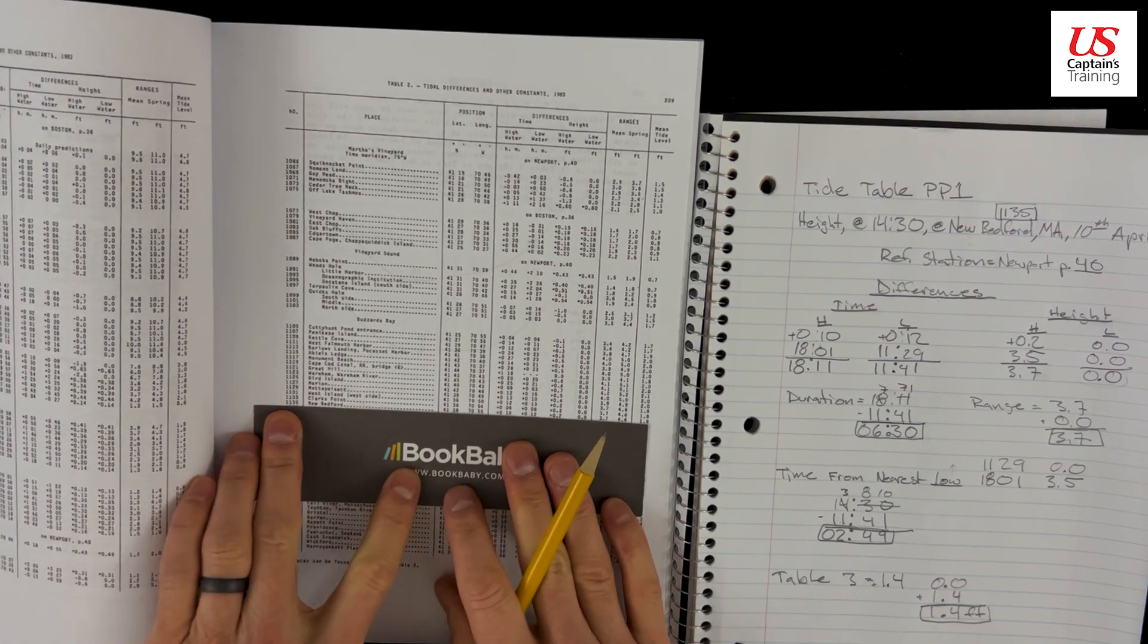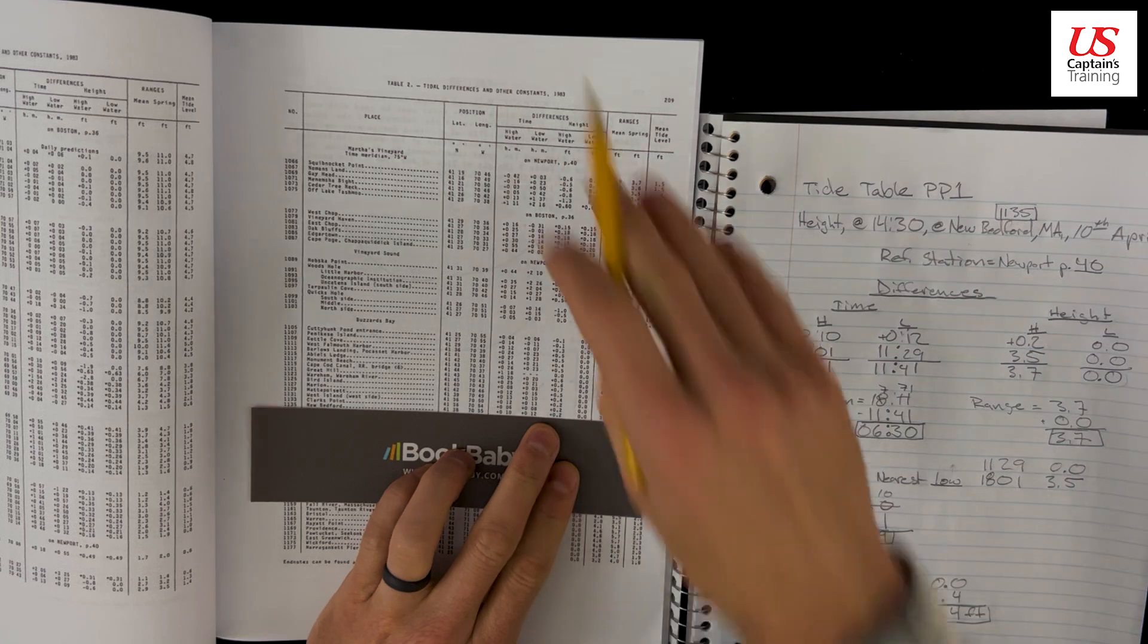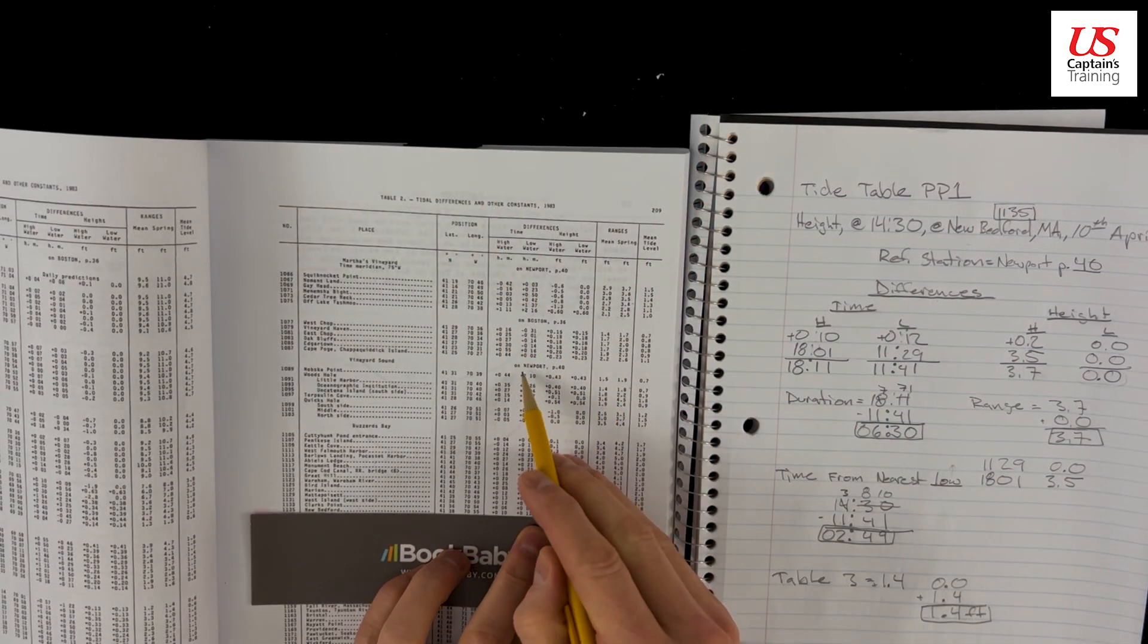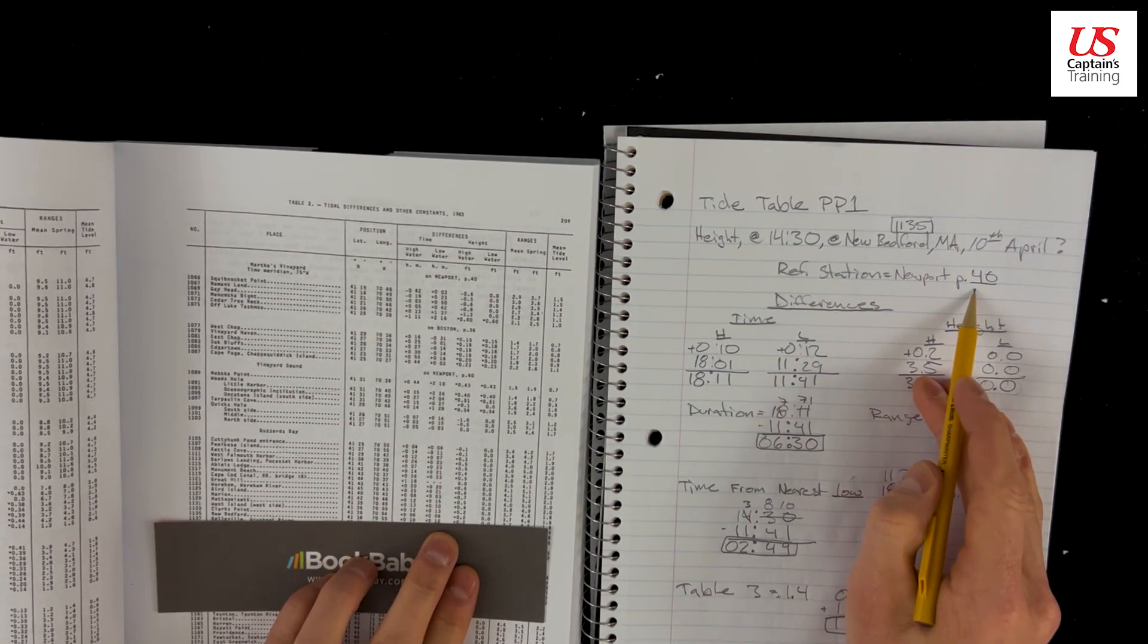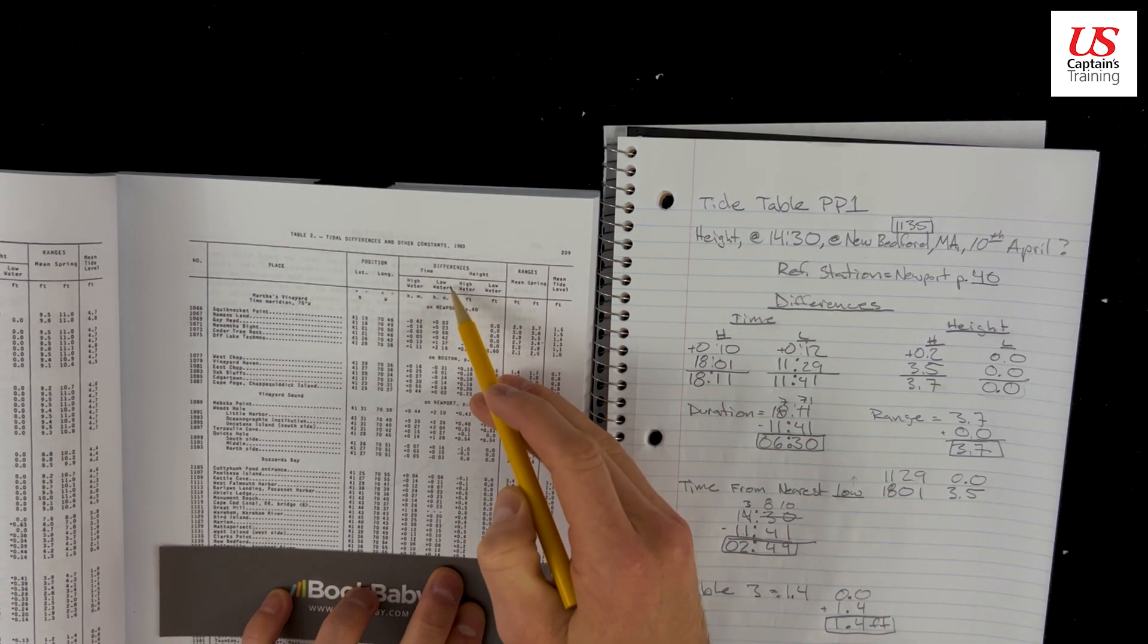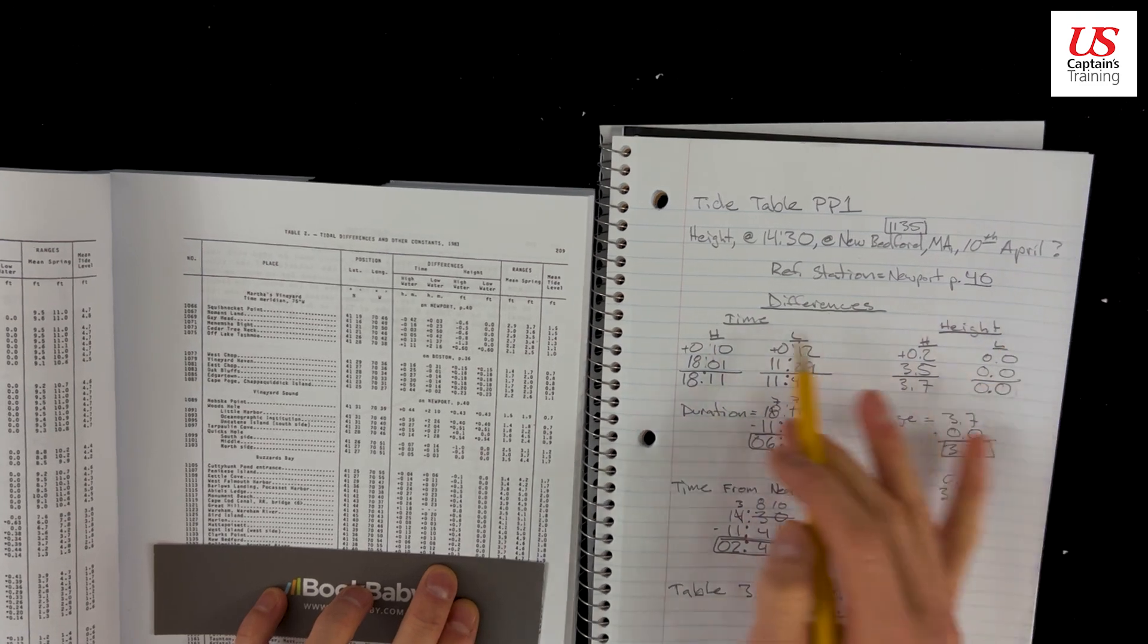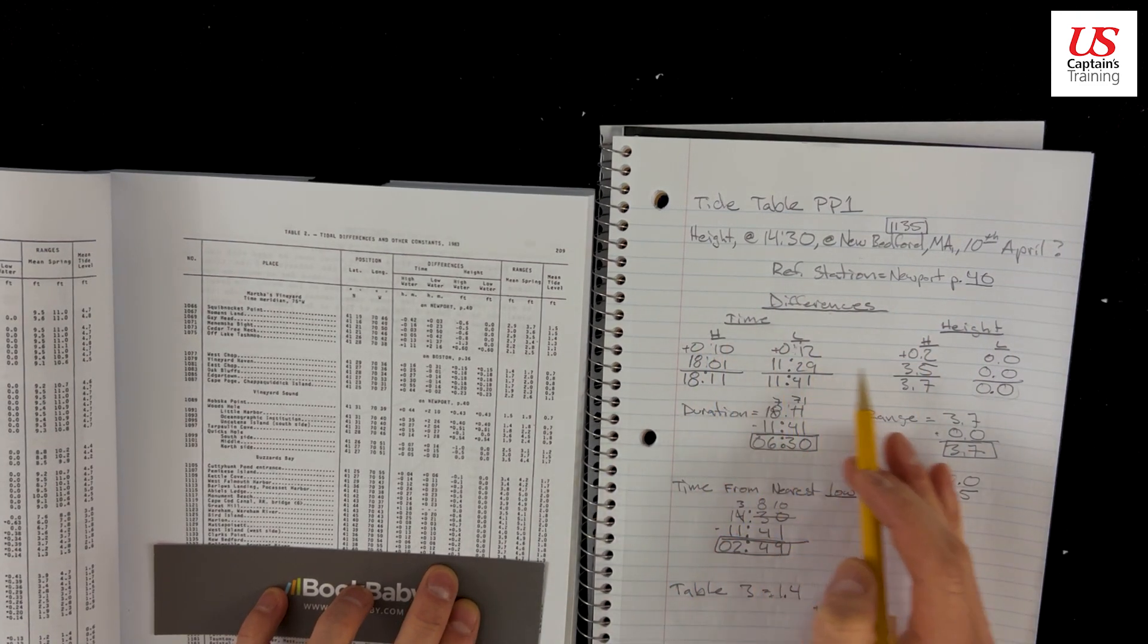1135 New Bedford, and so here's the differences. We cruise up, we'll say on Newport page 40, that's our reference station, so we record that. And then these are all the differences: differences time high, differences time low, difference height high, difference height low. We set this all up beforehand, and now we just record the information in this table so we don't forget it.